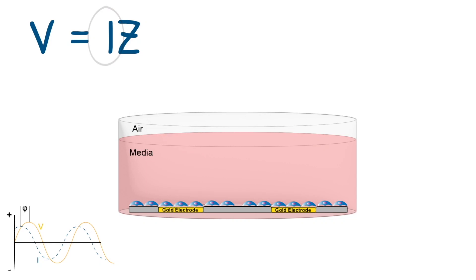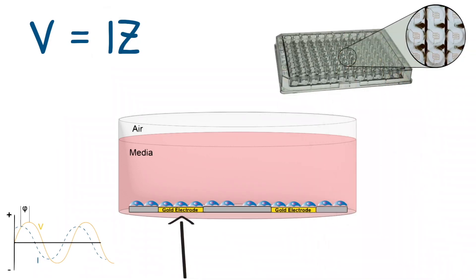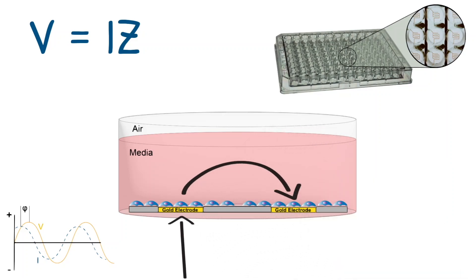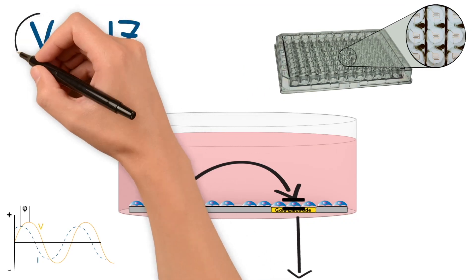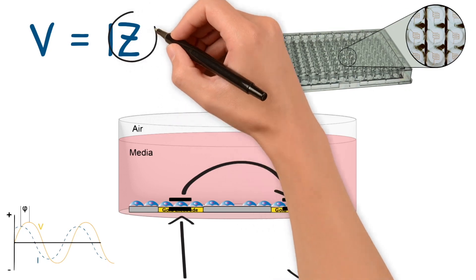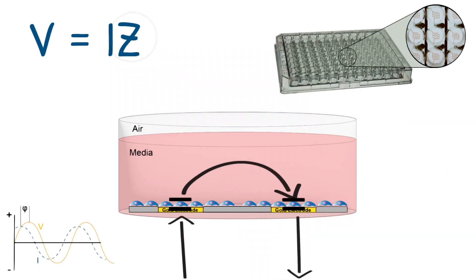ECIS sends a fixed alternating current through electrodes located at the bottom of ECIS cultureware. As the current is being sent through the electrodes, the culture medium acts as a conduit for the electrical current to travel between the electrodes in the same well, thereby completing a circuit. As the cells grow and cover these electrodes, their fatty membranes act as insulators and impede the current, causing a voltage change, which is then measured by the instrument and in turn allows us to calculate the impedance caused by the cells.